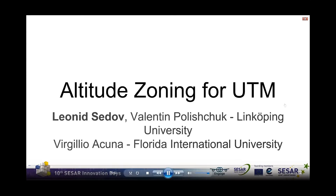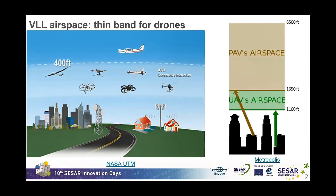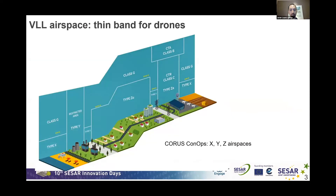I will present the main results of our work on establishing different zones with similar altitudes for UTM. It is currently envisioned by many ConOps and research projects that future drones will be limited to very low level and controlled airspace to separate them from general aviation. But drone flights are not only bounded from above — noise, safety, privacy, and other concerns also put limitations on the minimum flyable altitude. These requirements may differ between countries, regions, or even different types of UTM airspaces.